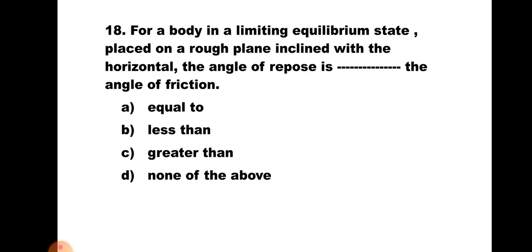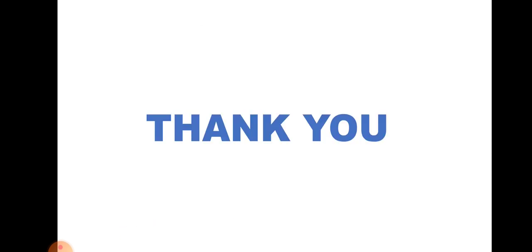Question number eighteen: For a body in limiting equilibrium placed on a rough plane inclined with the horizontal, the angle of repose is __ the angle of friction — a) Equal to, b) Less than, c) Greater than, d) None of the above. When the body is in limiting equilibrium on a rough inclined plane, the angle of repose and the angle of friction are the same. Hence the correct answer is a) Equal to. Thank you.